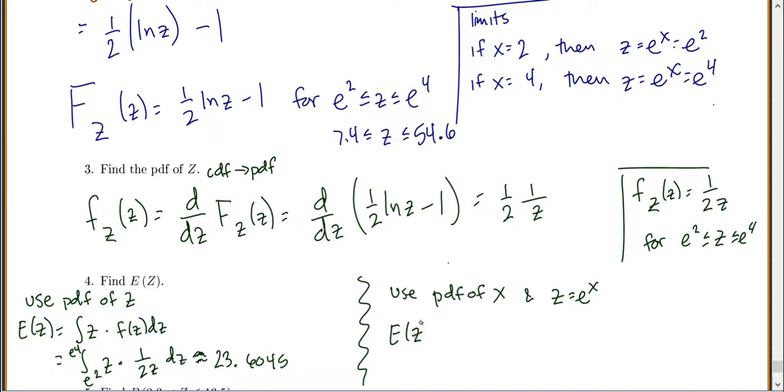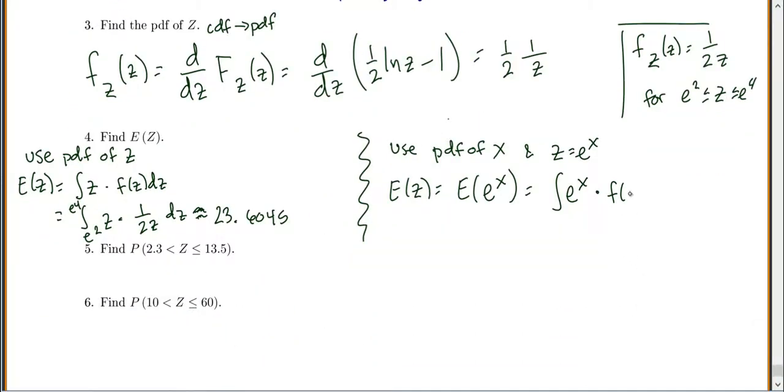So we could say the expected value of z is really the expected value of e to the x. So that would be the integral of e to the x. So expected value, always put whatever you want the expected value of times the PDF. In this case, it would be the PDF of x since we have an x in there.